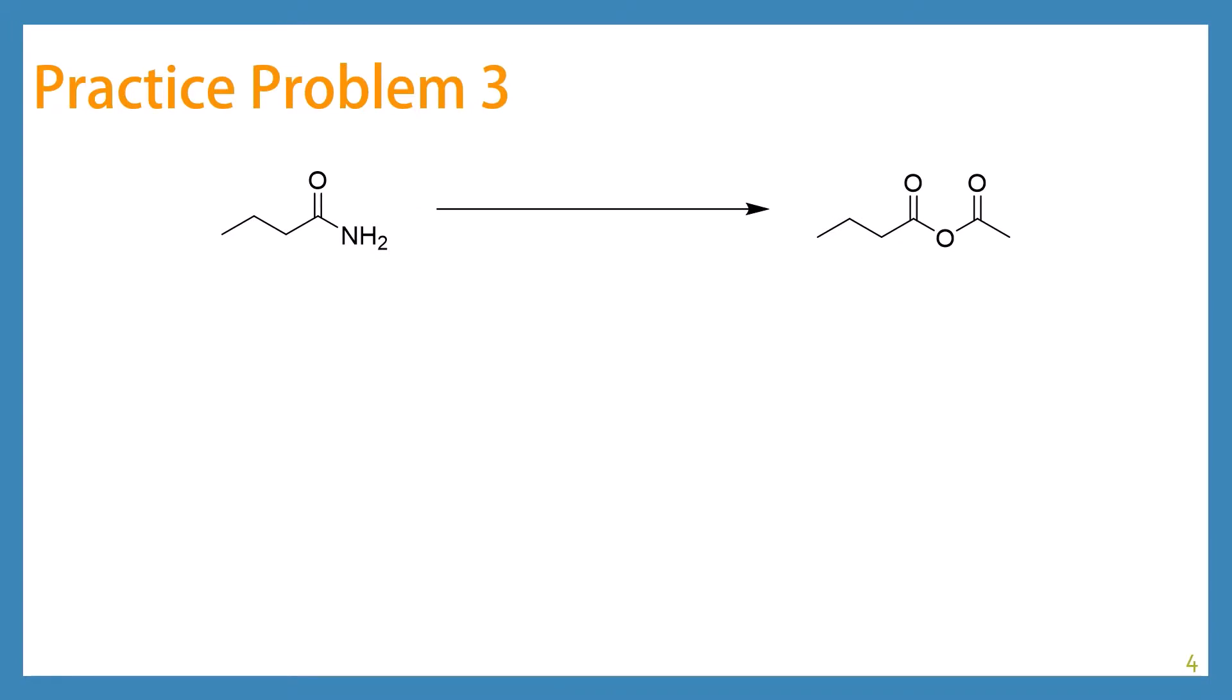Okay, for our last practice problem here, this one is actually a synthesis. So instead of giving you the reagents and you coming up with the product, I gave you a starting material and a product, and you need to figure out how you're going to get there. So a couple things. We are starting off with an amide, which you may recall is our least reactive of our carboxylic acid derivatives that still has a carbonyl carbon. So before we can do anything with it, a really smart move would be to go ahead and just hydrolyze that amide because we know that we're not going to be able to do much with the amide itself.